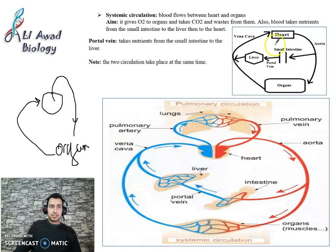You see here, this is the heart. Aorta takes blood to organs via arteries and arterial capillaries, but then vena cava returns blood to the heart.